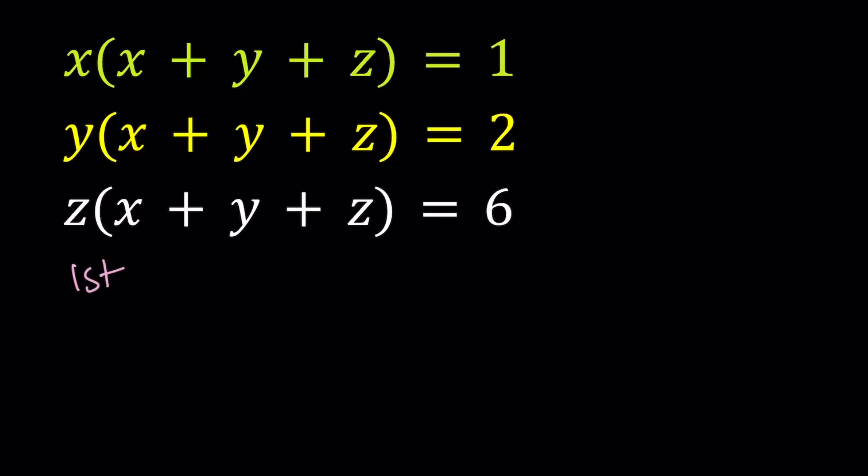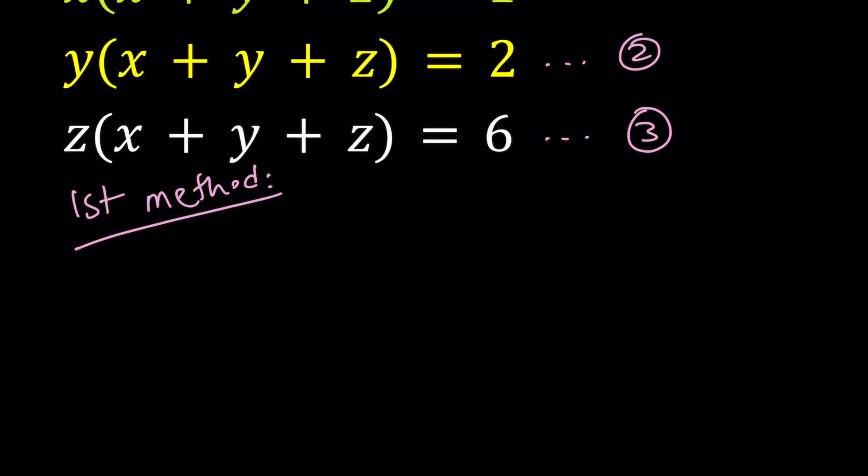So for my first method, I'm going to do the following. Let's go ahead and number these equations. Let this be equation number one, let this be equation number two, and let this be equation number three. First of all, I'm going to divide one by two. You could also do two by three. It doesn't matter.